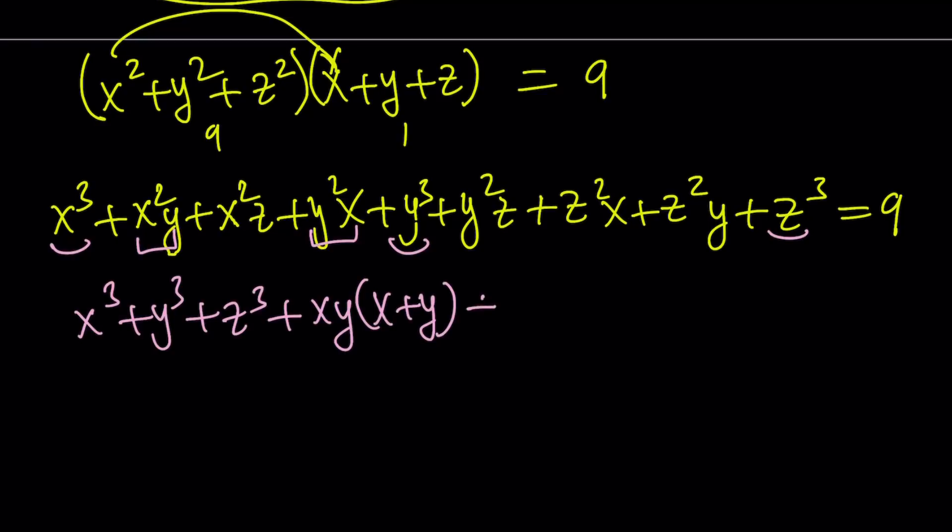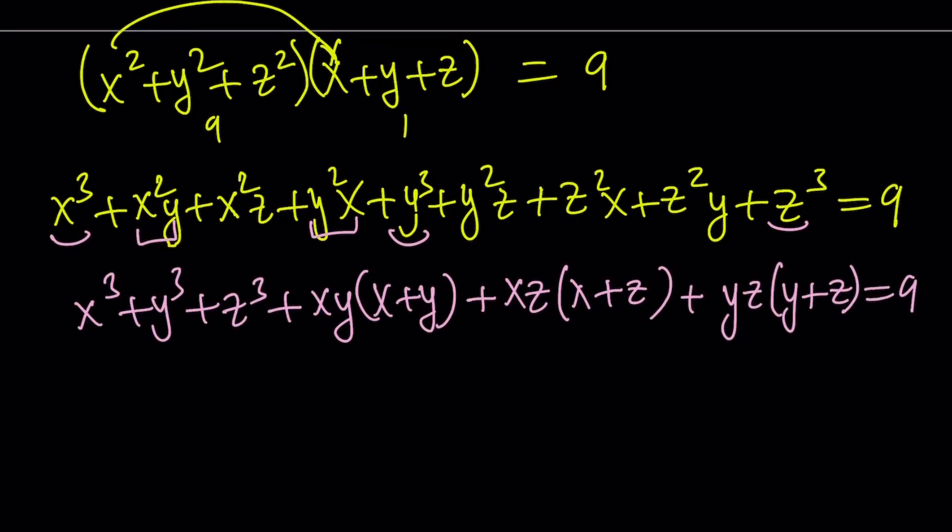And then, we can do the same thing for all pairs. x, z, x plus z, and then y, z, y plus z. And that is equal to 9 again. All right.